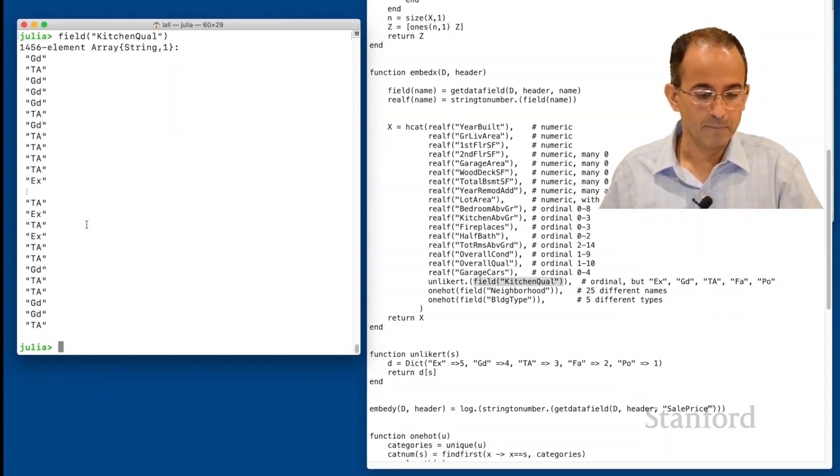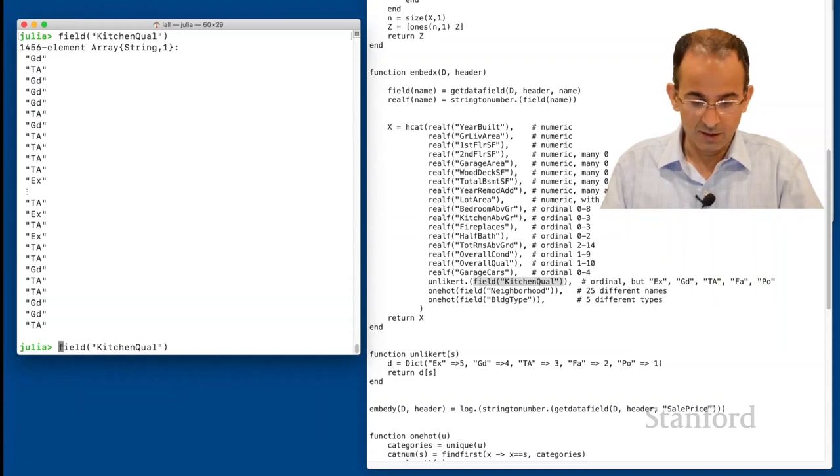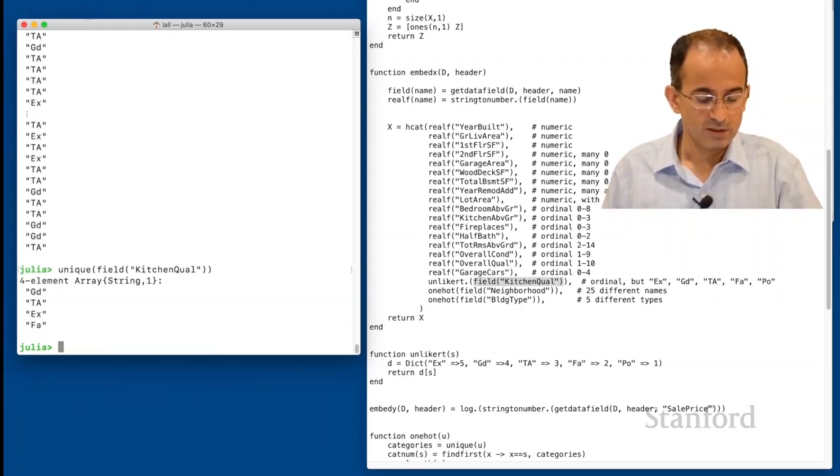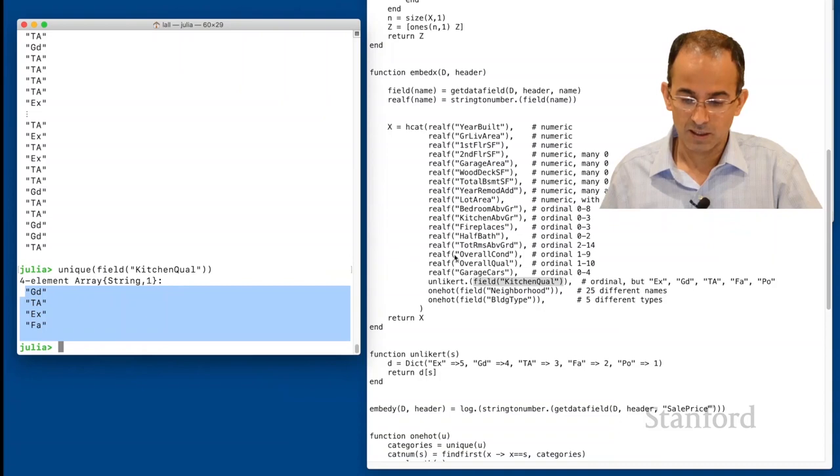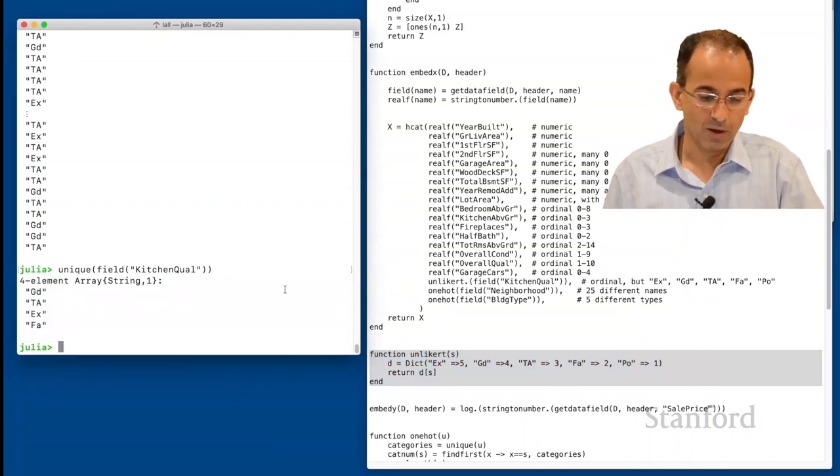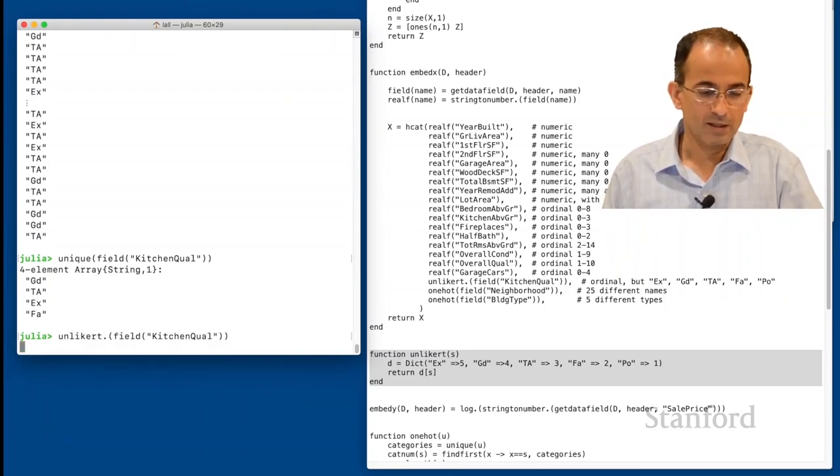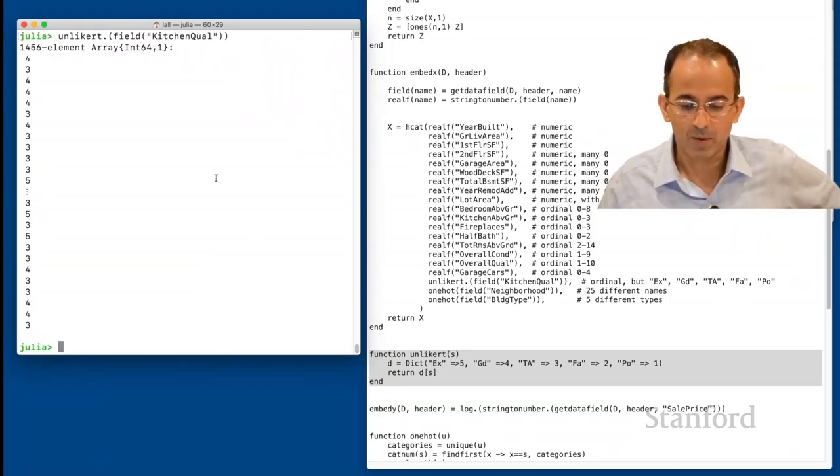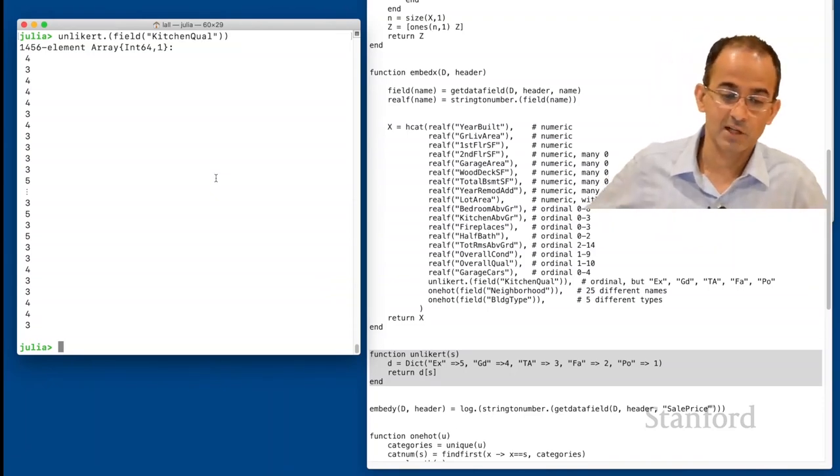Now we can also look at some of the more complicated ones. One here that's more complicated is the kitchen quality field. If we look at the kitchen quality field, that's a Likert scale. The entries in it are GD for good, TA for typical, excellent, and there may be - there are others. We can unique that and see all of the unique entries in it. Good, typical, excellent, or fair. The Likert function, what that does is it maps these particular strings to numbers. Here it is. So Likert sets up a dictionary which maps x to 5, good to 4, TA to 3, fair to 2, and poor to 1, and returns the corresponding number. And so if I apply UnLikert to that, I get a list of numbers. Notice the dot again because I'm applying the UnLikert function to each entry of the array separately, and returning back an array of the results.